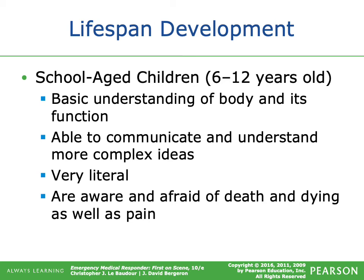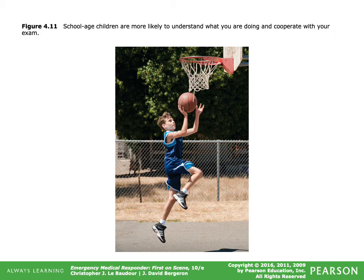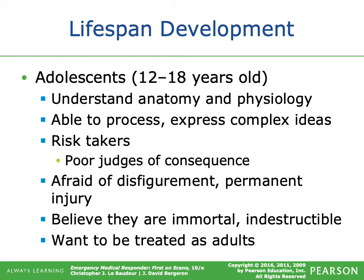School-aged children (six to 12 years) have a basic understanding of the body, can communicate and understand more complex ideas, are very literal, and are aware of and afraid of death, dying, and pain. They're more likely to cooperate, though they can still experience anxiety. Adolescents have a basic understanding of anatomy and physiology, can process complex ideas, are risk-takers (especially young boys), are afraid of disfigurement and permanent injury, and believe they're indestructible. They want to be treated as adults.